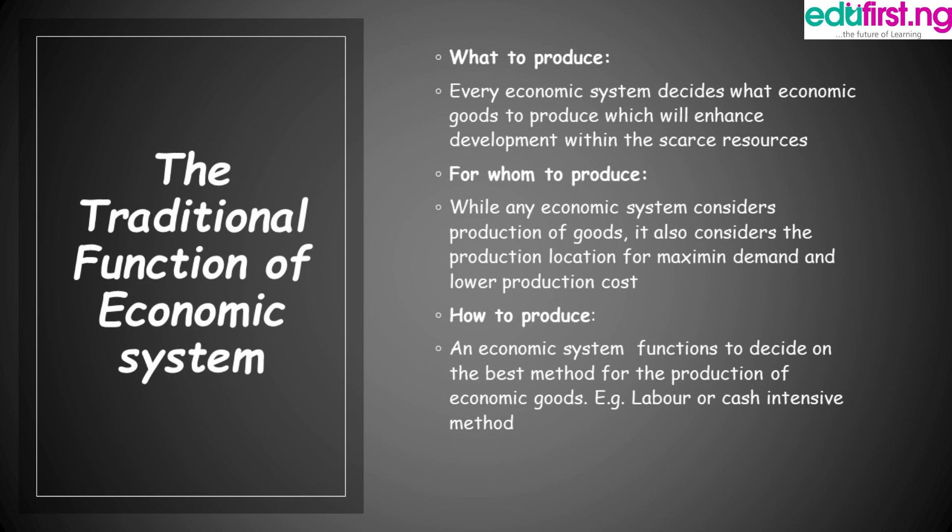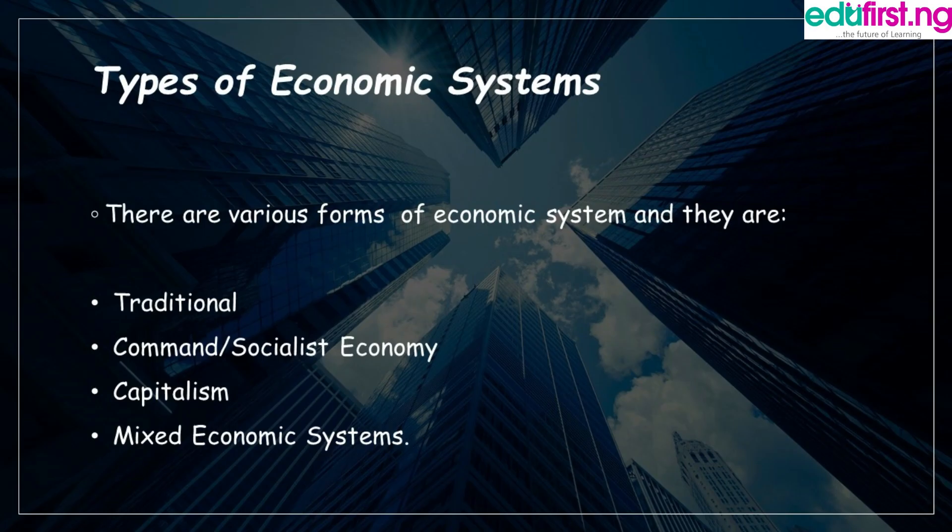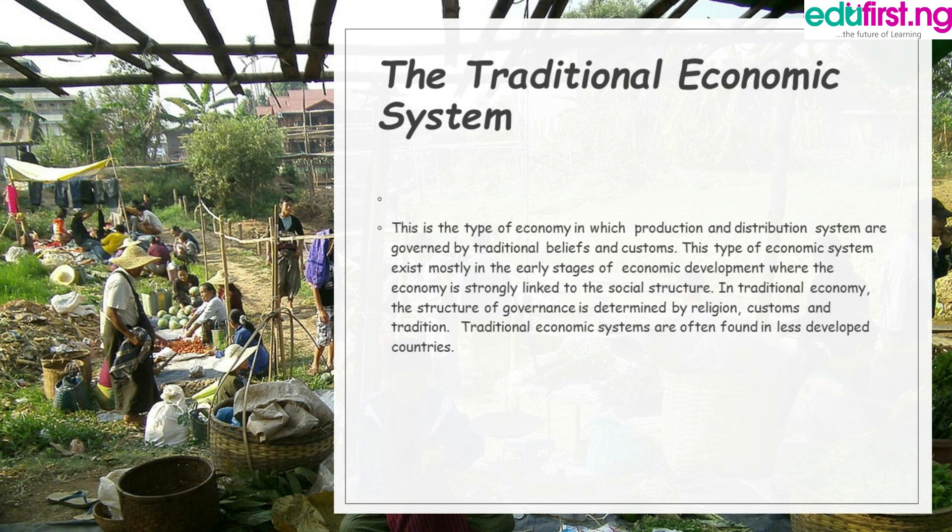Now, what are the types of economic system? We have various types, namely: traditional economic system, command or socialist economic system, capitalist economic system, and mixed economic system. We are going to consider each one after the other. First, the traditional economic system.